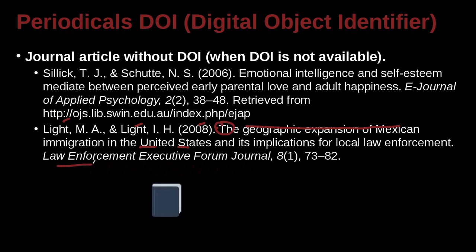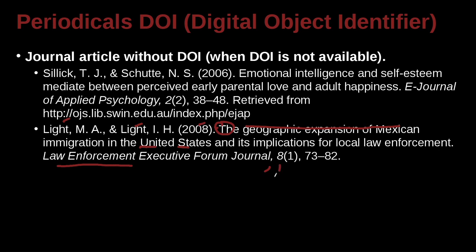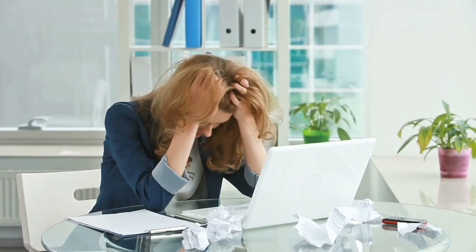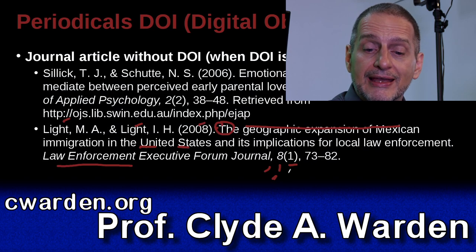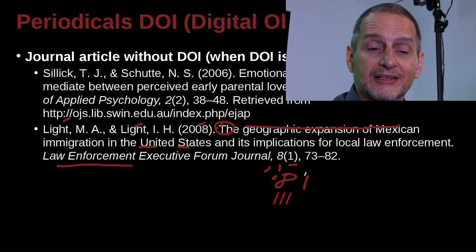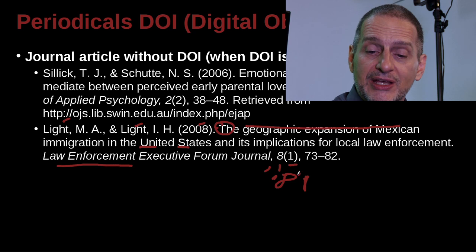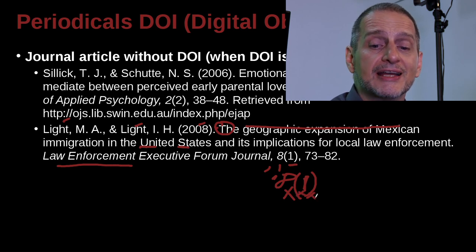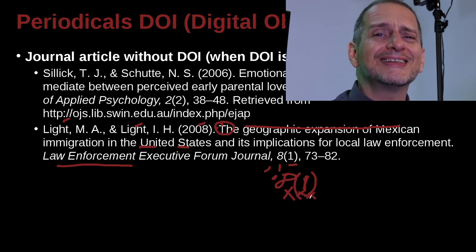And then we have the journal name here, which is italicized, and then a comma. Here we have the number, and the number is also italicized. And then the issue, which is not italicized. So this is always very confusing and easy to forget. Please pay attention to this: the volume number is italicized, the issue number in parentheses is not italicized, and there is no space before or after the parentheses.